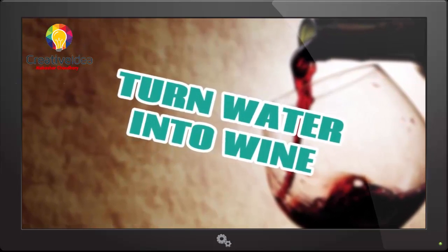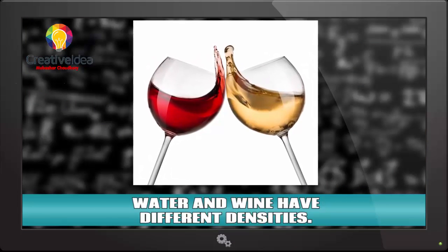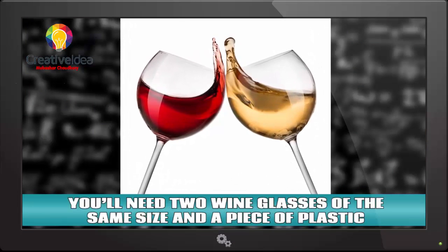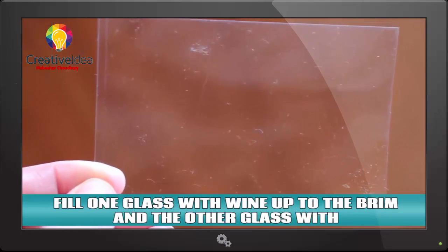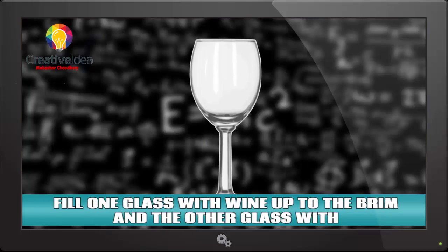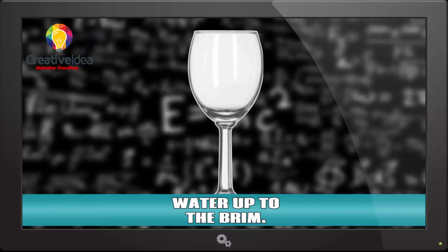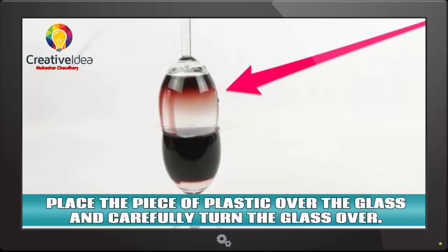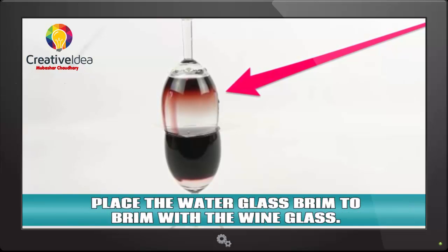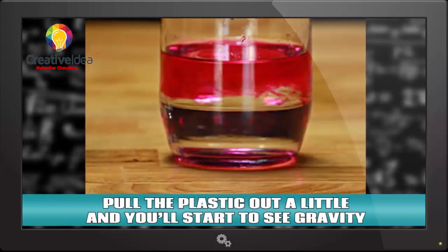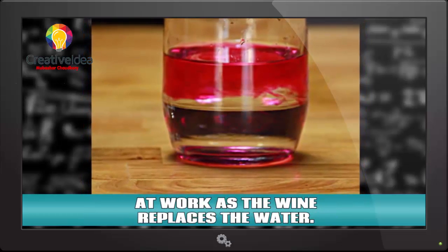Water and wine have different densities. You'll need two wine glasses of the same size and a piece of plastic that is slightly bigger than the rim of each glass. Fill one glass with wine up to the brim and the other glass with water up to the brim. Place the piece of plastic over the glass and carefully turn the glass over. Did I mention this experiment is kind of messy? Place the water glass brim to brim with the wine glass. Pull the plastic out a little and you'll start to see gravity work as the wine replaces the water.